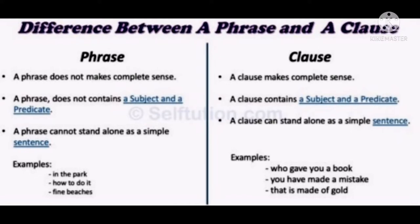Look at the examples: 'In the park.' 'How to do it?' 'Fine beaches.' When we hear these groups of words, we have the feeling that the sentence is incomplete. So, a phrase is a group of words without a complete meaning. When we hear it, we have the feeling that the sentence is incomplete. A group of words without complete meaning is called a phrase.